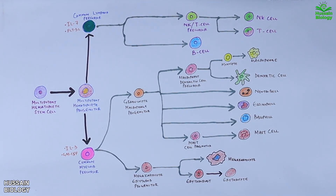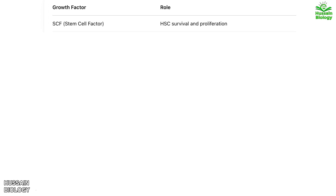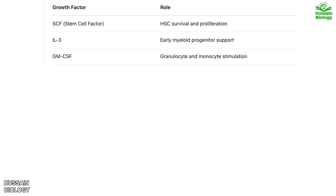Now let's break down the key growth factors and their roles in hematopoiesis. First, SCF or stem cell factor is essential for the survival and proliferation of hematopoietic stem cells — the foundation of all blood cells. IL-3 supports early myeloid progenitors, helping them grow into various blood cell types. GM-CSF stimulates the production of granulocytes and monocytes, a crucial player in immune defense. For neutrophils, G-CSF is the key factor driving their maturation to fight off infections.